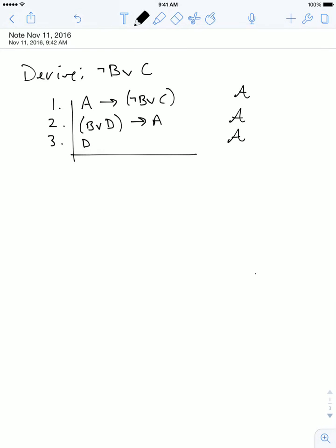So now, whenever we're starting a derivation, we want to ask ourselves the following question: does my target sentence, the thing I'm trying to derive, appear anywhere as a component in one of my primary assumptions? And the answer to the question in this case is yes, it does right here.